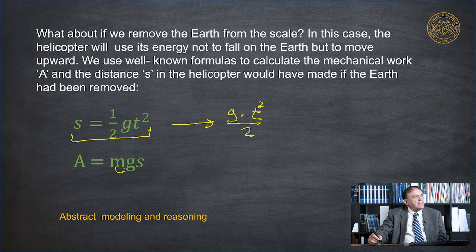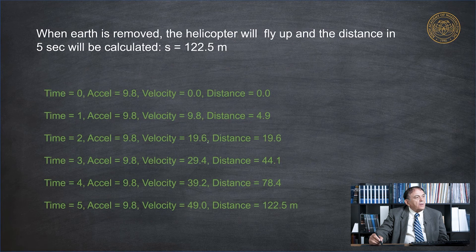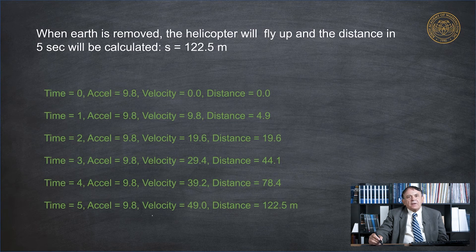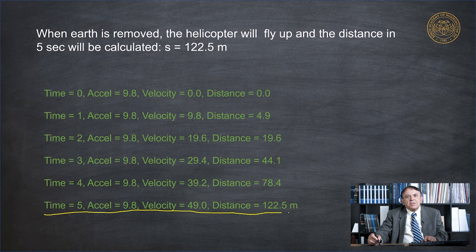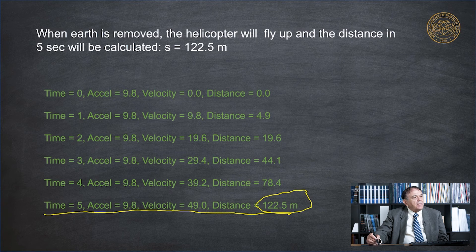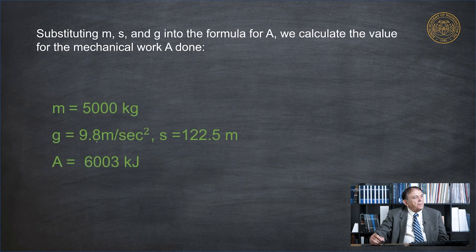So when we have this, we can calculate the mechanical work because m is given to us. And m is just 5000 kilos. So the problem becomes extremely simple. What we do now, we just calculate the distance with time at five seconds.